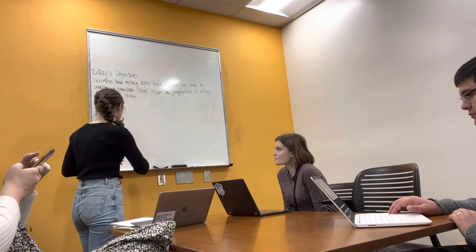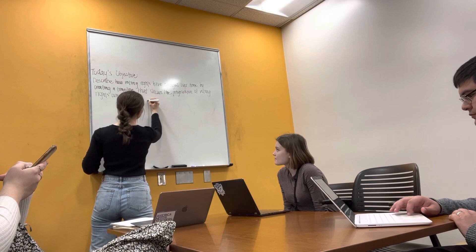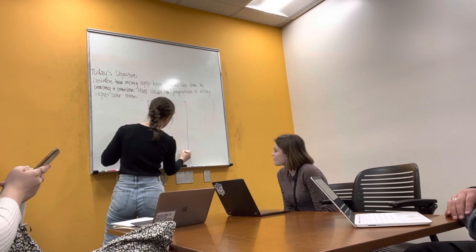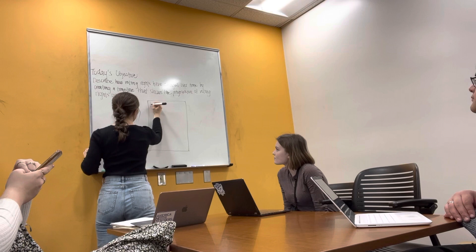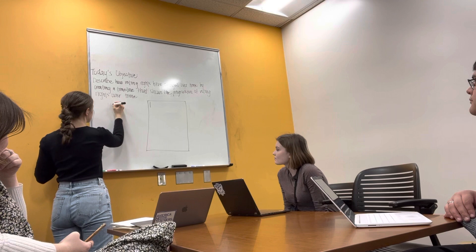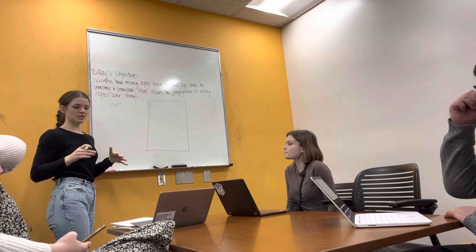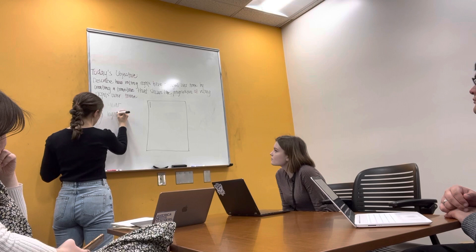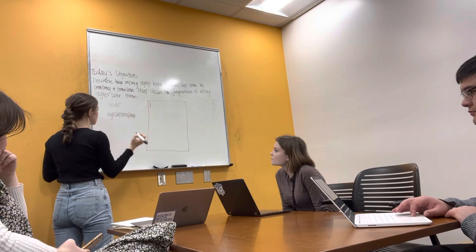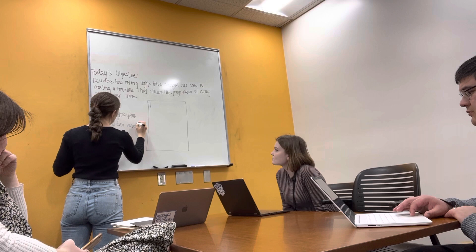We'll do an example together, and then you'll have the opportunity to work individually and then in a small group. This is what your box looks like. In each box you're going to write out the year that certain legislation or certain amendments were passed to expand the right to vote, what the legislation or amendment was, and who can now vote.